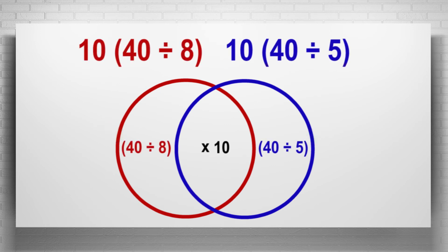In our final example, note which portion of each expression is the same and which is different. The Venn diagram for the expressions 10 times the quotient of 40 divided by 8 and 10 times the quotient of 40 divided by 5 looks like this. In each expression, the dividend is divided by a different divisor. But in both, the quotient is multiplied by 10.